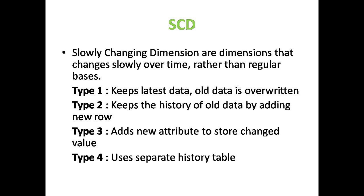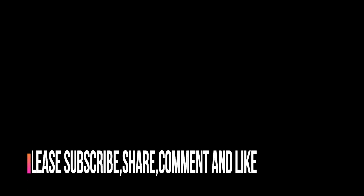To summarize: Slowly Changing Dimensions change slowly over time rather than on a regular basis. Type 1 - old data is overwritten, only new data is kept. Type 2 - keeps history of old data by adding new rows using effective dates, start date, and flags. Type 3 - adds a new attribute to store the change, such as previous place and current place as a new column. Type 4 - uses a separate history table along with the main table, with surrogate key as the common column. I will explain surrogate key in my next video. Thank you very much, signing off - Rajesh.